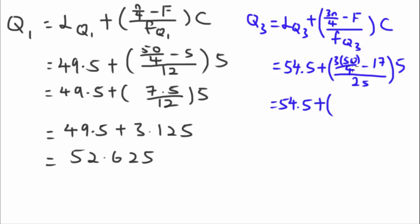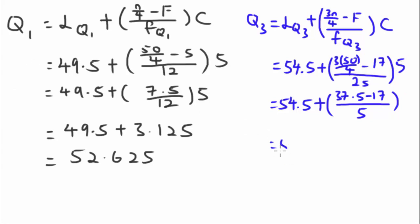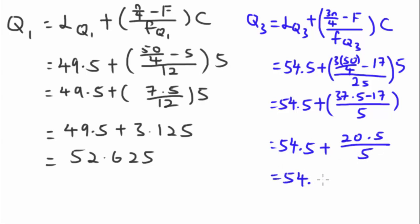Simplifying: 37.5 − 17 = 20.5, then 20.5 / 25 × 5 = 20.5 / 5 = 4.1. So Q3 = 54.5 + 4.1 = 58.6.